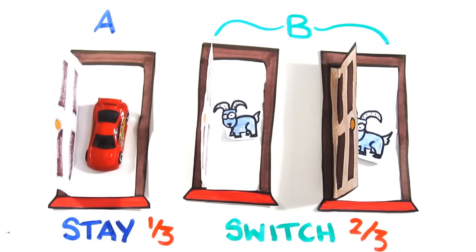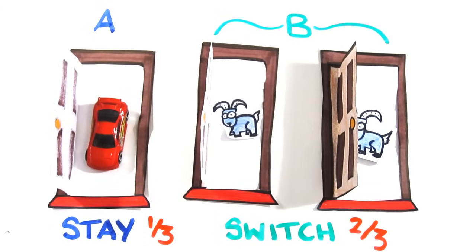Therefore, A will happen one-third of the time, and B will happen two-thirds of the time. As such, switching your door wins two out of three times.